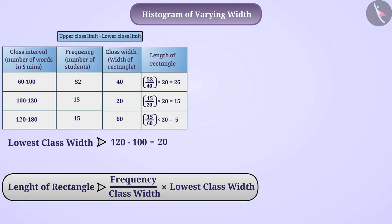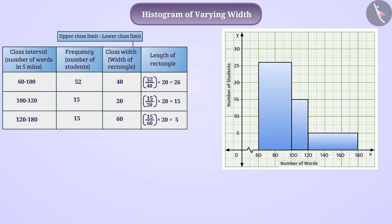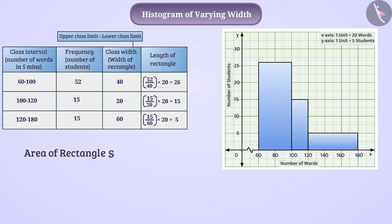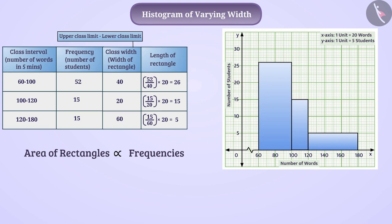Now we will draw rectangles with a suitable scale for each class interval. Here we have taken 1 unit equal to 20 words on the x-axis and 1 unit equal to 5 students on the y-axis, from which we have obtained the histogram in this way. Now you stop the video and find out whether the area of the rectangles in this histogram is proportional to the frequencies or not. Try it. You must know that now the area of rectangles is proportional to frequencies.